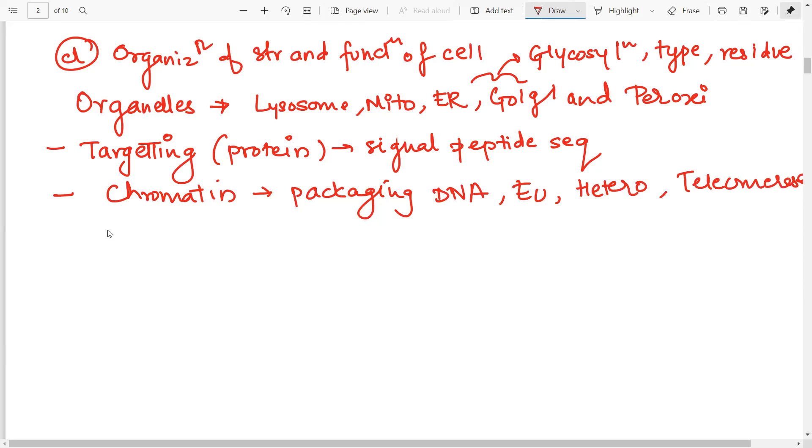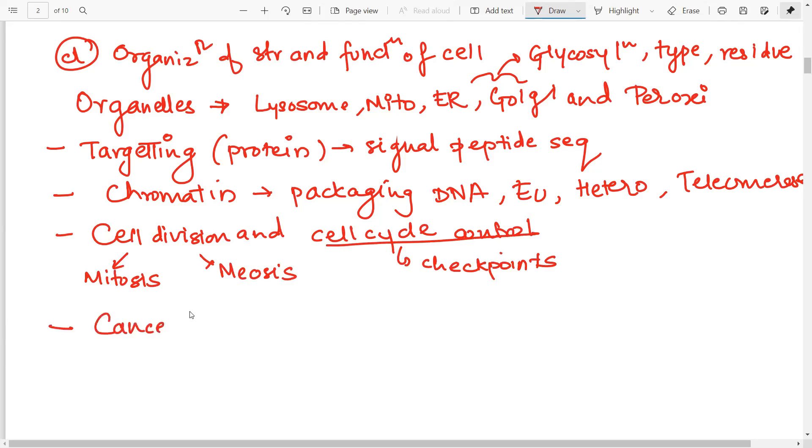Then you need to understand and be very well versed with the cell division and the cell cycle control. In this, you will obviously have both mitosis and meiosis. So you should know exactly everything about the stages, the number of chromatids in each with much emphasis on the checkpoints. Then you have to, in association with this, when you understand how a normal cell functions, you have to go on to learning about cancer.